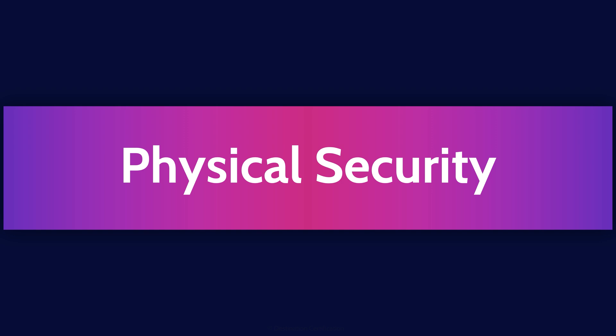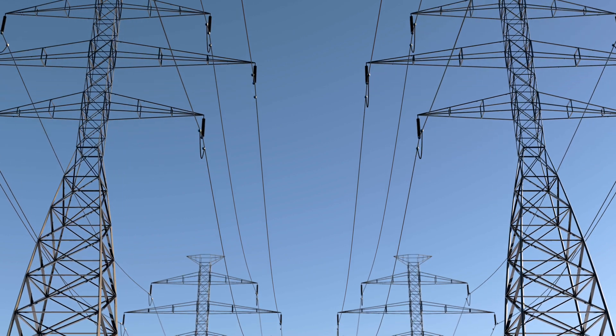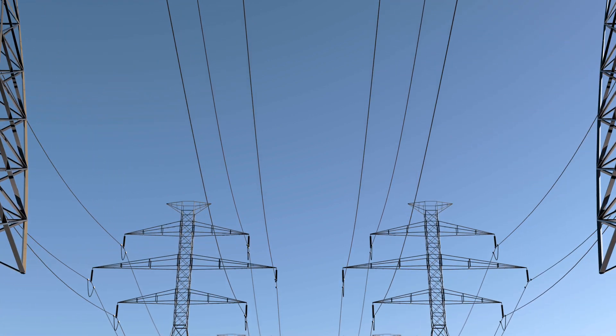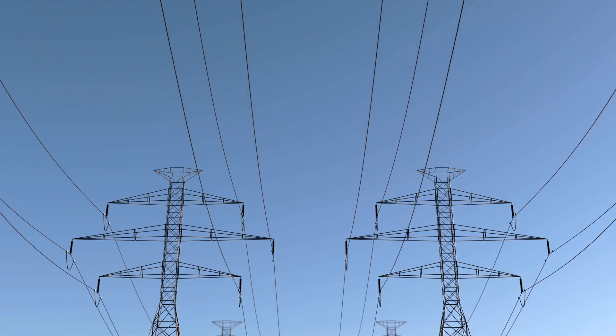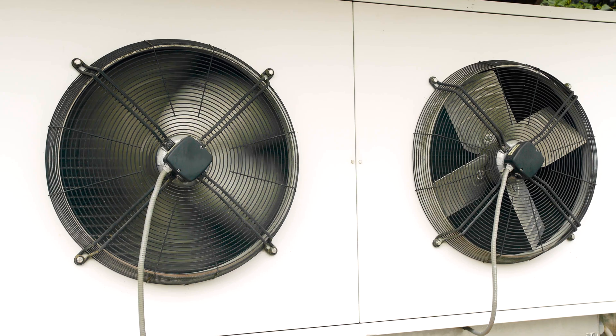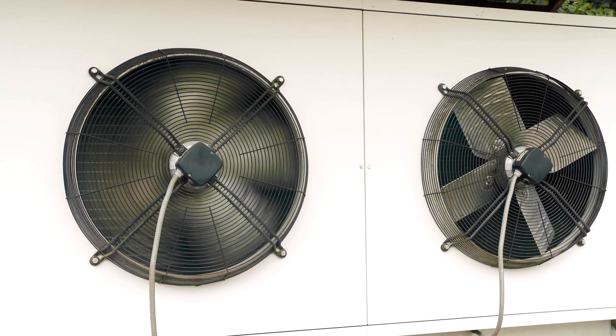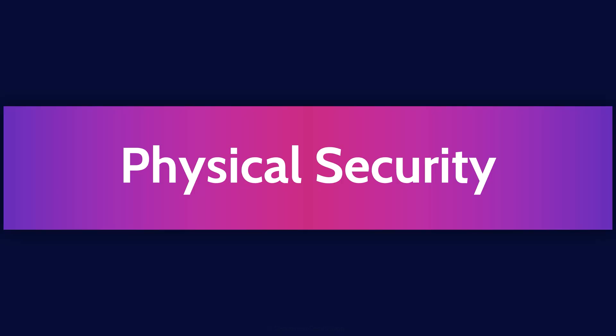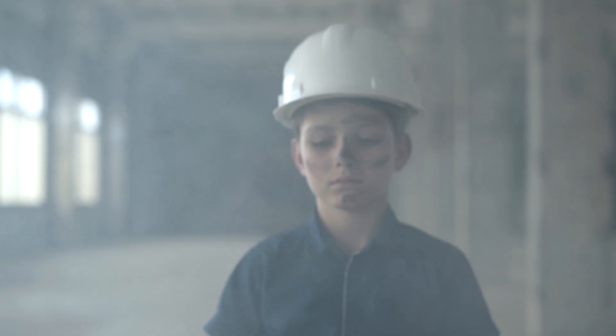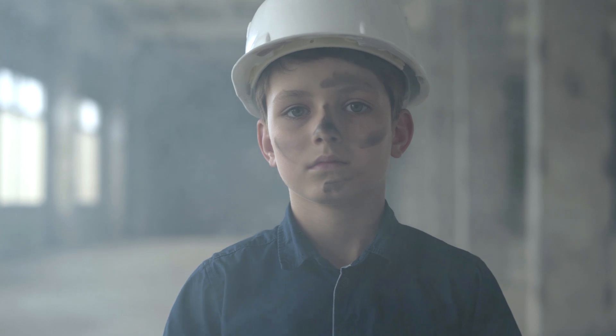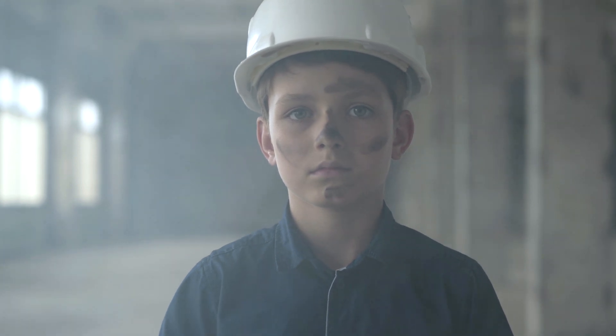Physical security is also critical in achieving integrity and availability, as physical security controls like UPSs and generators provide a good clean supply of power and electricity. HVAC systems provide cooling air at the right temperature and right humidity, and fire detection and suppression systems help to ensure our facilities don't burn to the ground. All very important things in achieving confidentiality, integrity, and availability.